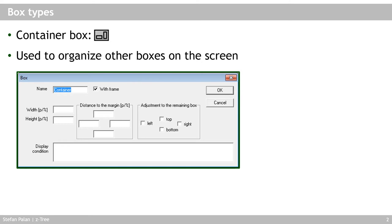This allows you to, for example, adjust the size of all of the boxes within the container box in one go by simply adjusting the size of the container box — at least if the boxes contained have relative, that is percentage, width and height settings. The same goes for the distance settings and in particular the display condition: specifying a display condition for the container box lets you hide or show the entire container including all boxes inside with just one condition.